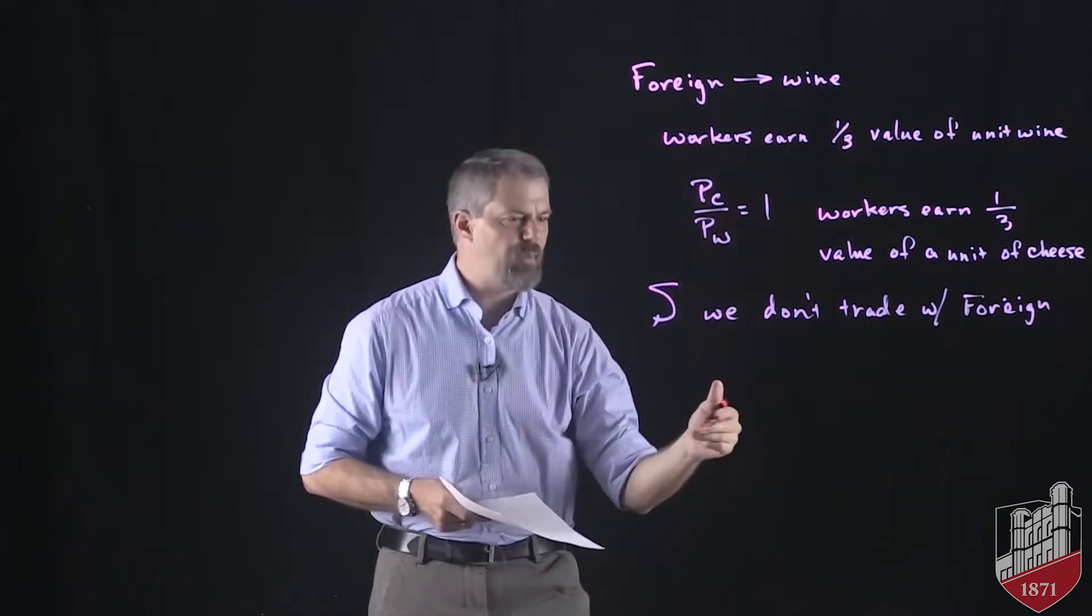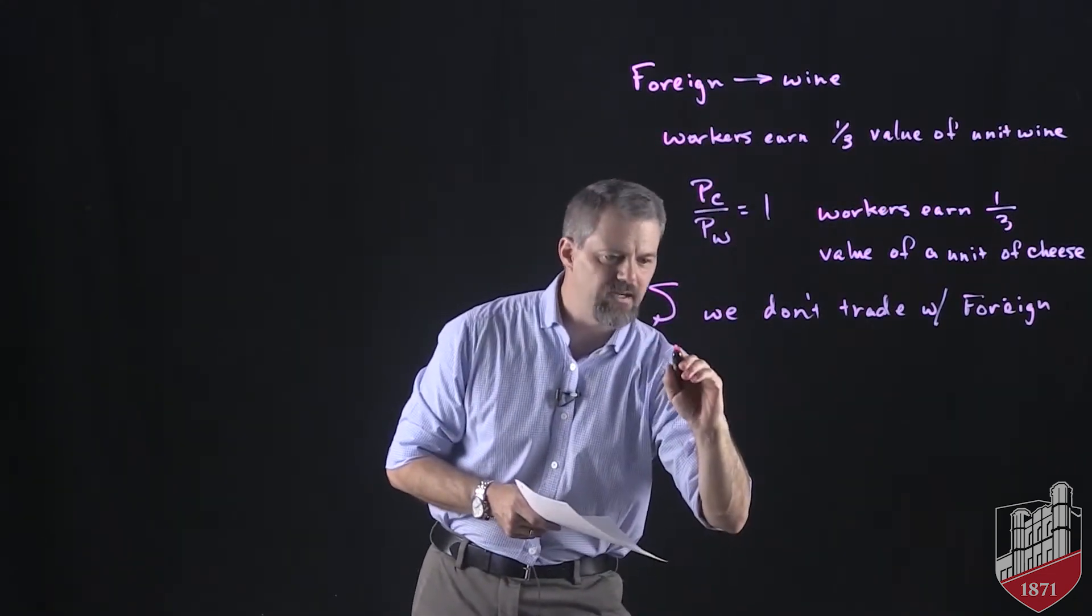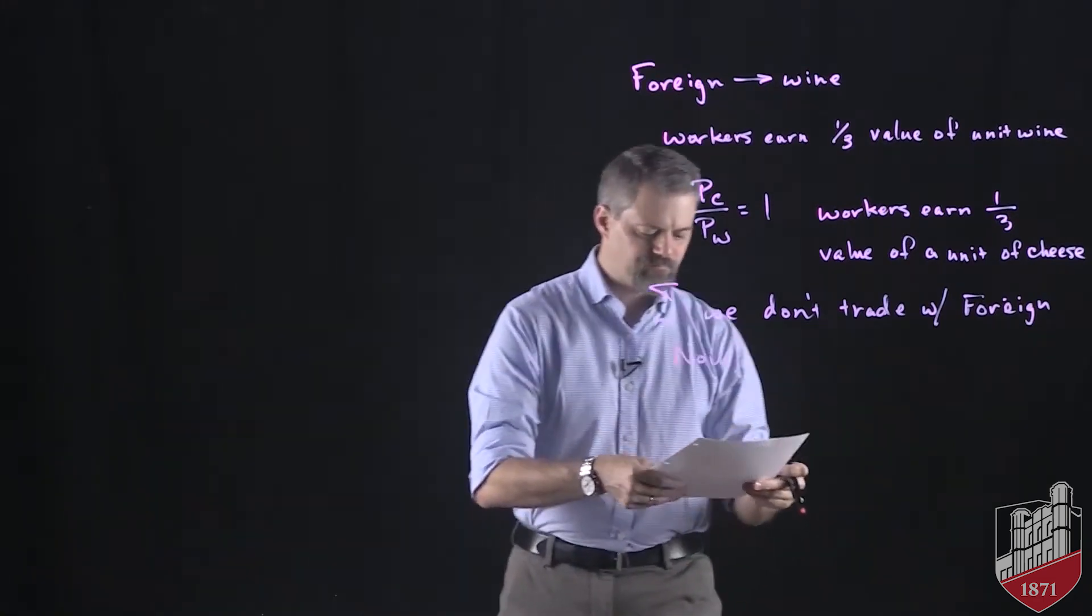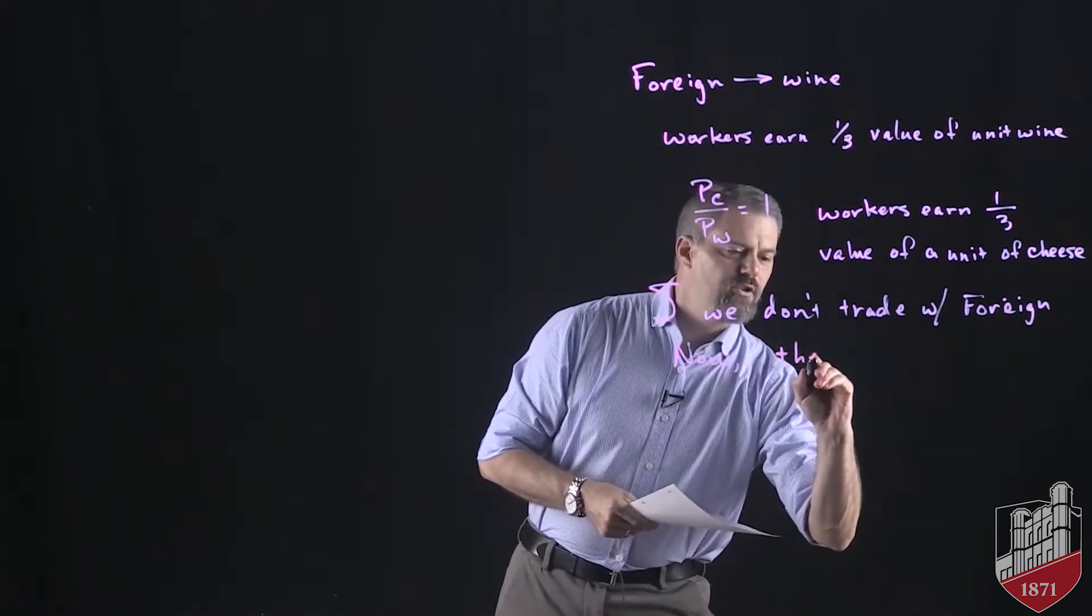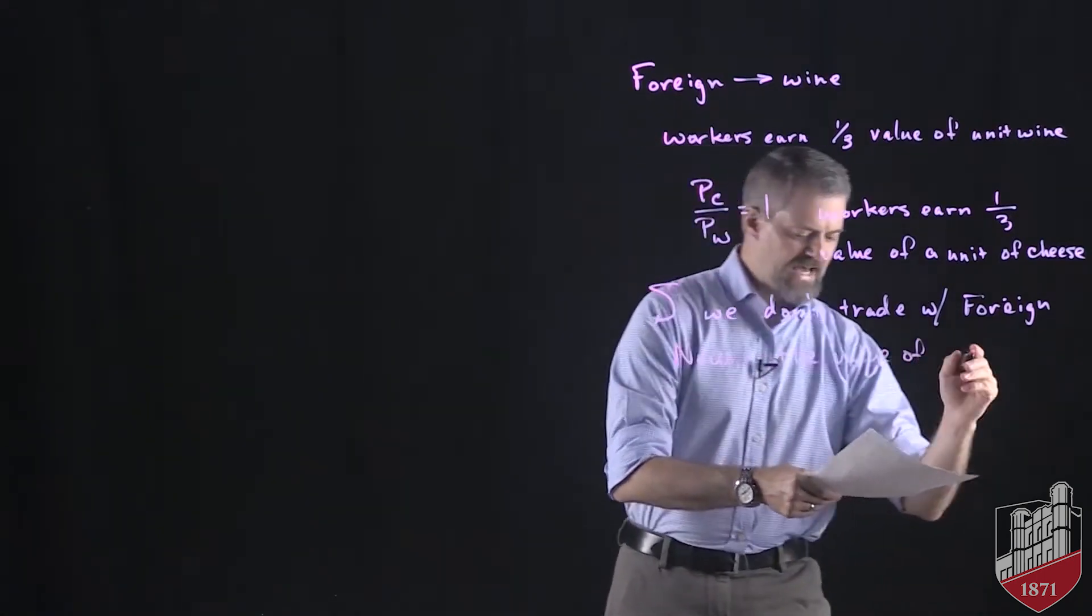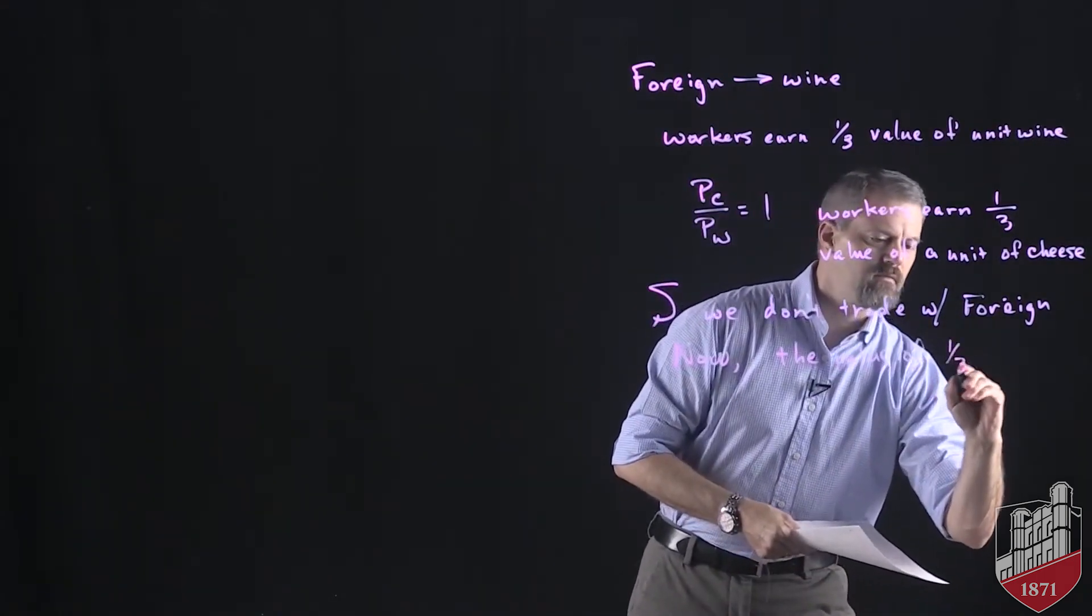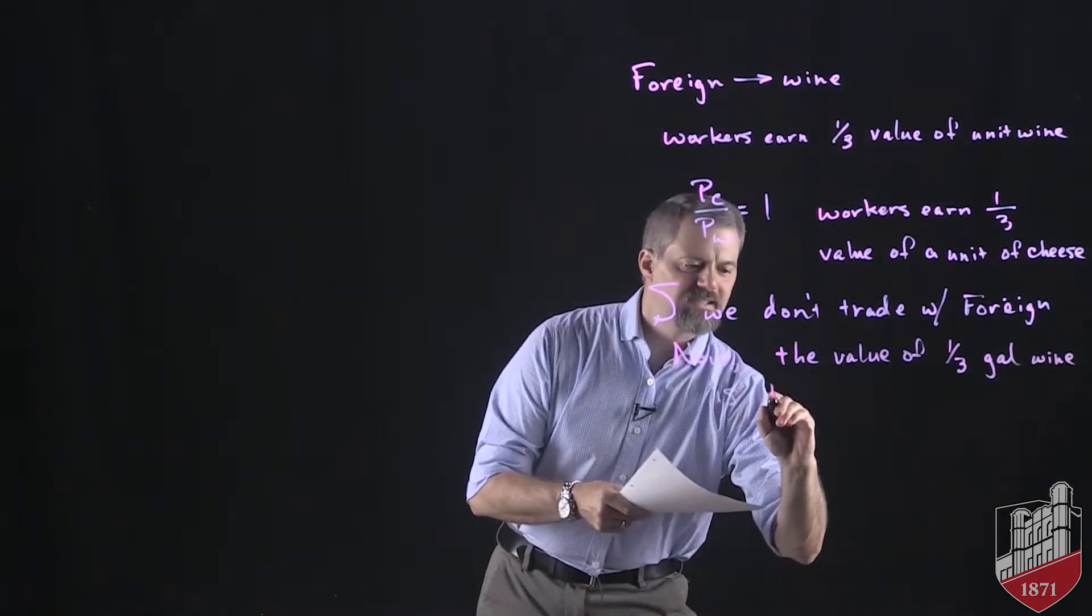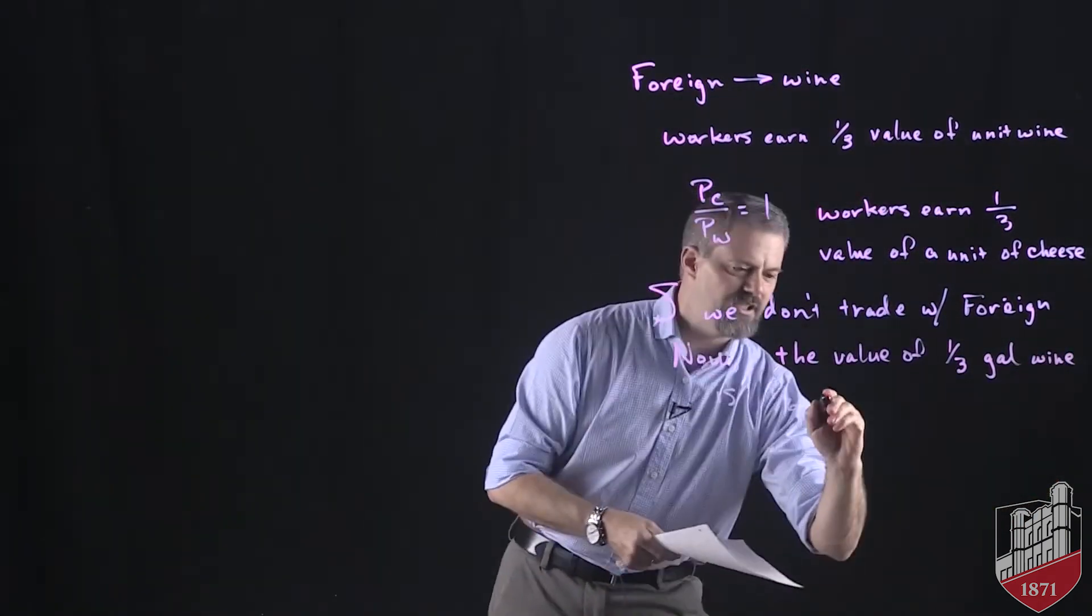So now in foreign, the value of one-third gallon of wine is one-sixth of a pound of cheese. And let's think about why that's going to be the case.